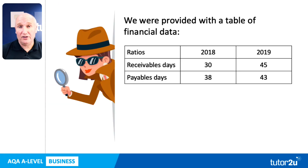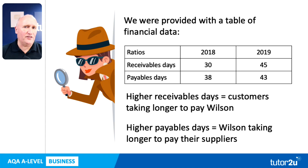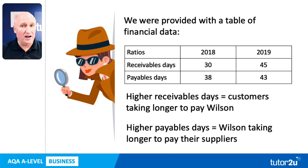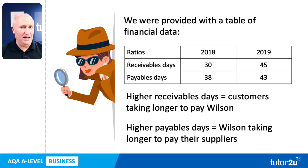Here was the information given to us — a simple table for 2018 and 2019. Receivables days increased from 30 to 45. Payables days also increased from 38 to 43. Receivables days is the average time it takes for customers to pay us. So as Wilson, on average, customers took 45 days to pay in 2019. Payables days is the average time Wilson takes to pay our suppliers. So 43 days on average to pay suppliers in 2019, up from 38 the year before.